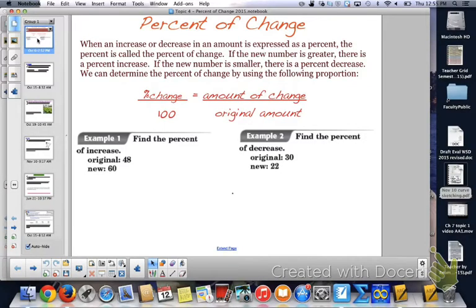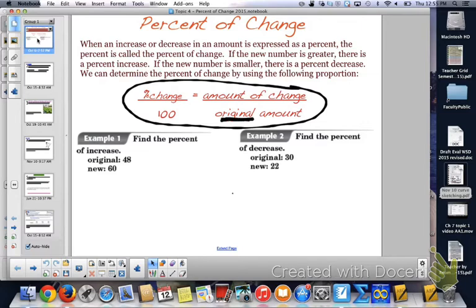We are going to talk today about percent of change. When an increase or decrease in an amount is expressed as a percent, the percent is called the percent of change. If the new number is greater, it's a percent increase. If it's smaller, it's a percent decrease. You can find the percent of change by using the following proportion: percent of change over 100 equals the amount of change over the original. Remember, the original goes on the bottom, and the amount of change is the difference.